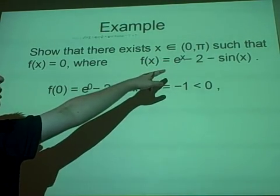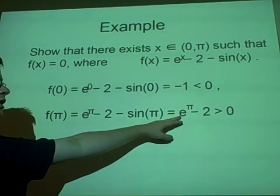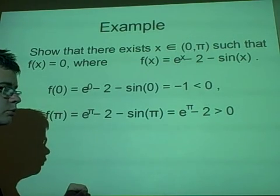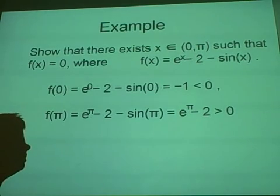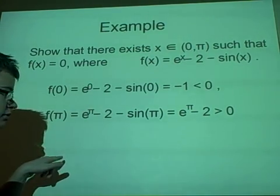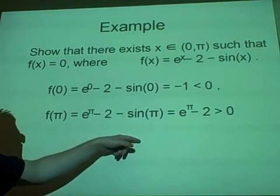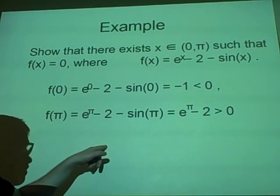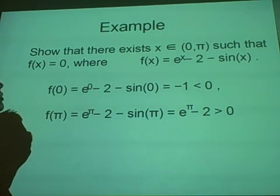But if we put in the value for π, so we have e^π - 2 - sin(π), then this gives us e^π - 2, which is bigger than 0, because e^π is greater than 2. And what this tells us is that over here, with 0, it's below the line, and with π, it's above the line. So there must be a point at which some x will actually be on the line. So that's proved.